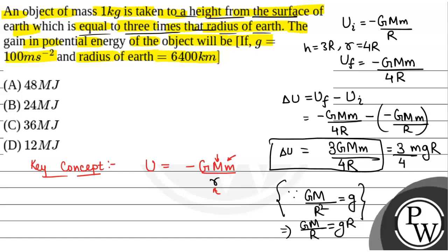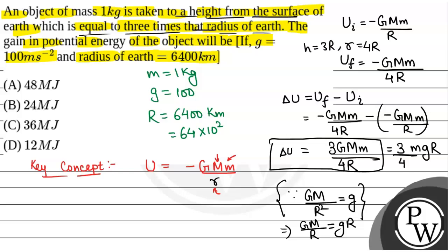Now we put in the values. m is 1 kg, g is 10 m/s² — this is a correction, it will be 10 m/s² not 100 — and the radius of earth R is given as 6400 km, which is 6400 × 10³ m, that is 6.4 × 10⁶ m.